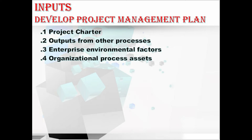Let's move to the organizational process assets, that is OPA. In the OPA, it may contain some organizational standard policies, procedures, and processes, or change control procedures including steps with official organization standards, policies, plans, procedures, or any project documents. It may also include monitoring and reporting methods, risk control procedures, communication requirements, and project information from previous similar projects — the historical information and lessons learned repository. Here we have completed all the inputs of the project management plan. Let's move to its tools and techniques.